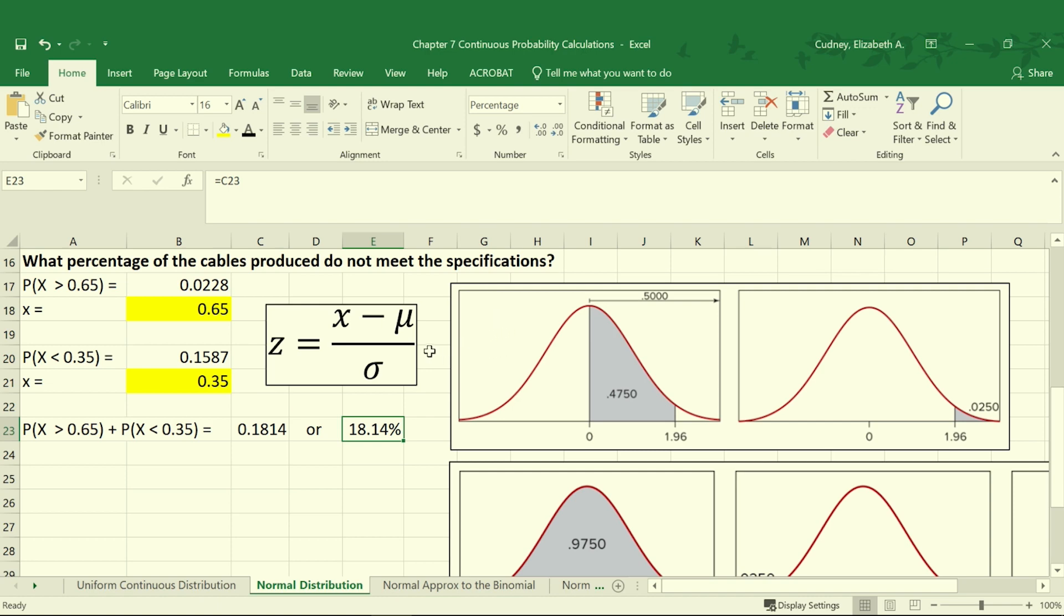So we know that 18.14% of our product will not meet specifications. From a management's perspective, we need to understand that we have to produce that much more if we need to have a certain quantity of good products, or in this example, cables. We have to make 18.14% more to make up for what will not meet our customer specifications, which is very costly if we're making almost 20% more extra product to make up for our defects.